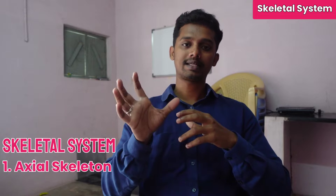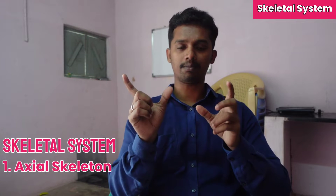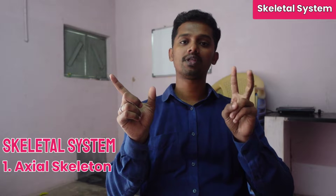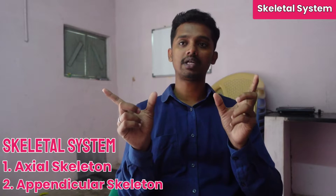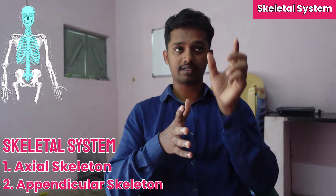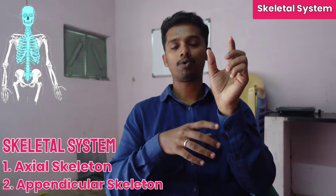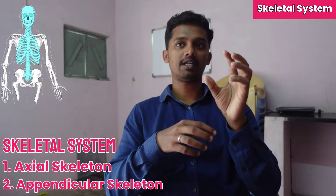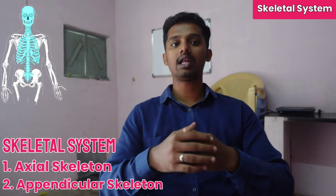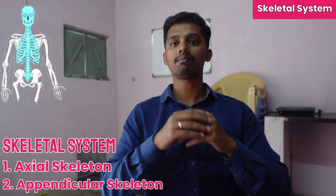Now, the skeletal system is divided into two main divisions. The first is the axial skeleton and the second is the appendicular skeleton. The axial skeleton refers to the bones along the vertical central axis of the body — including the skull, vertebrae, and thoracic cage. These are the bones in the center of the body.